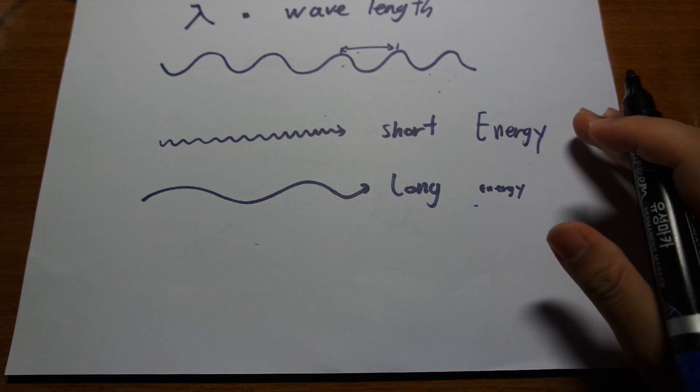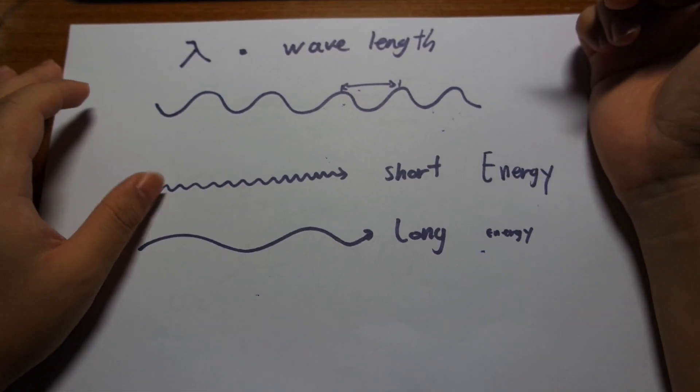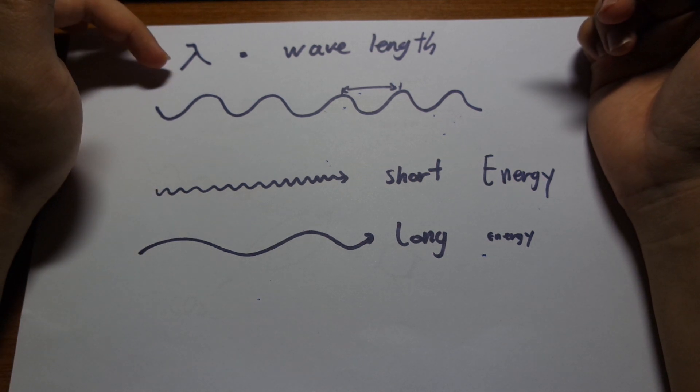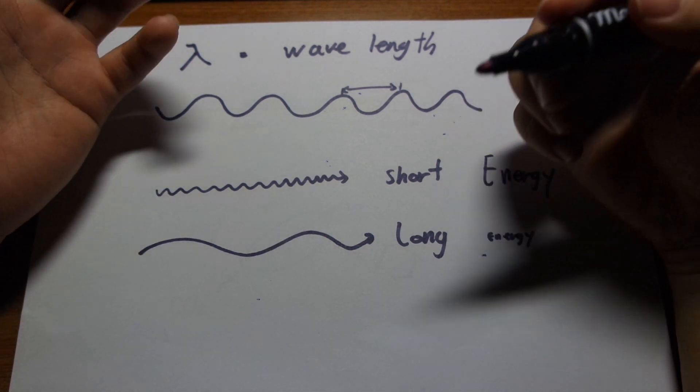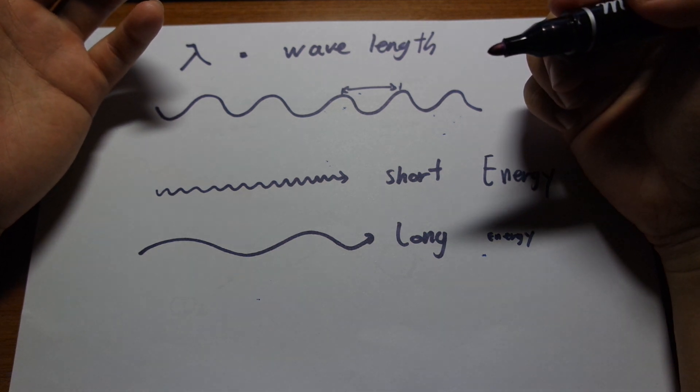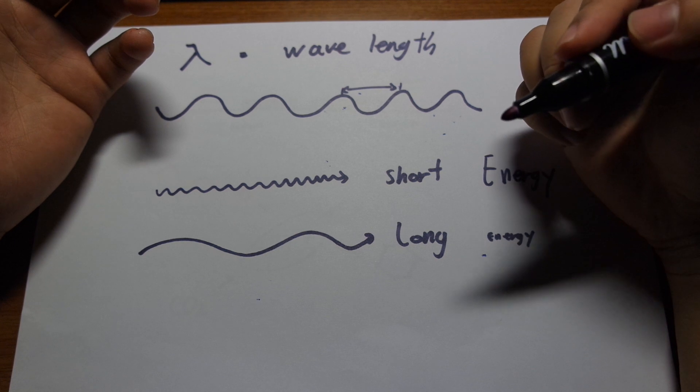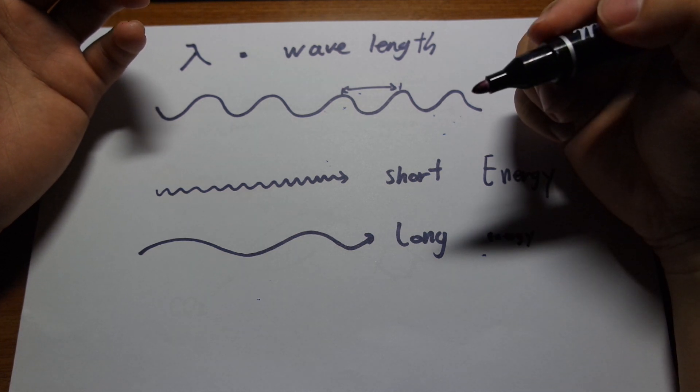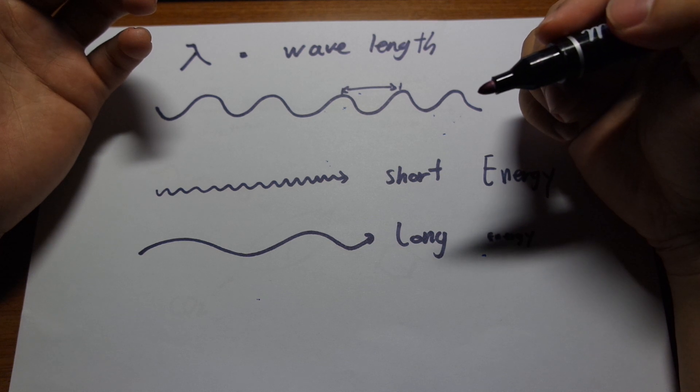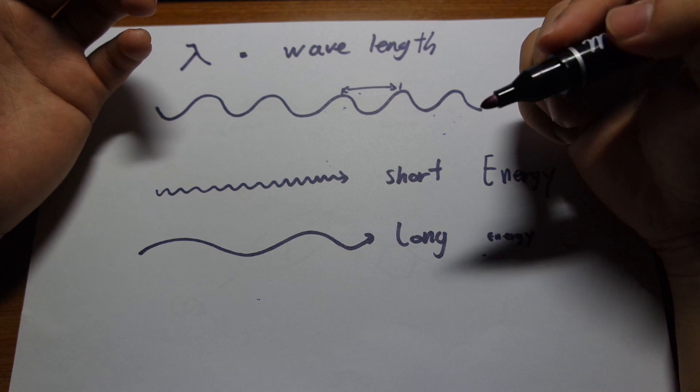And the second property of light is, of course, its wavelength. Now wavelength is often represented by the symbol lambda. So light has what's called a particle wave duality. So light behaves like a wave, just like sound. But it has this property as a particle because it can only come in certain sizes called a photon.